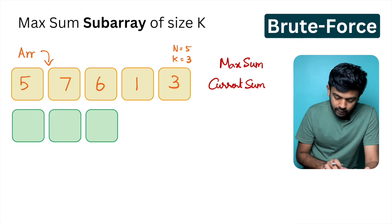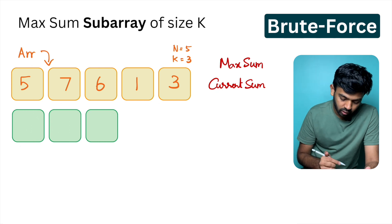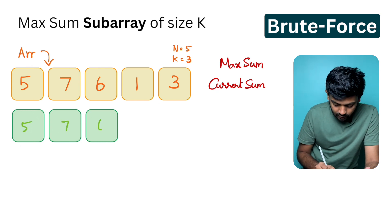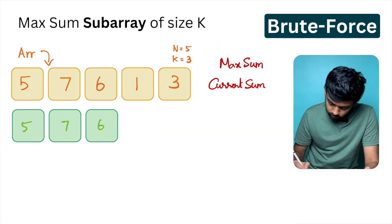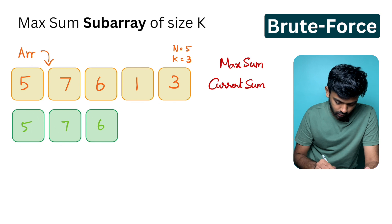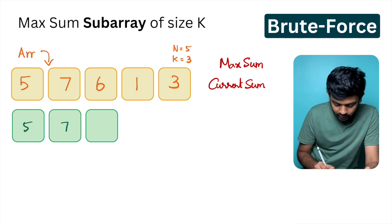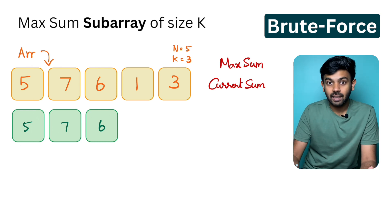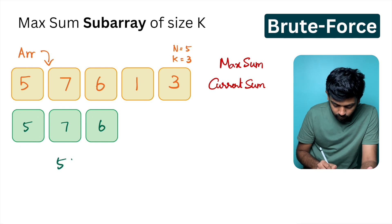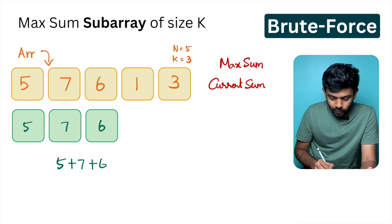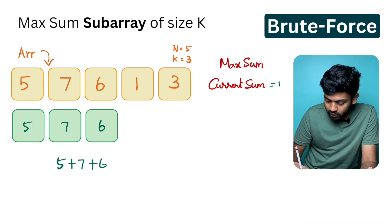The first subarray of size 3 that is possible is 5, 7, 6. We add 5 plus 7 plus 6: 5 plus 7 is 12, 12 plus 6 is 18. So your current sum is 18.